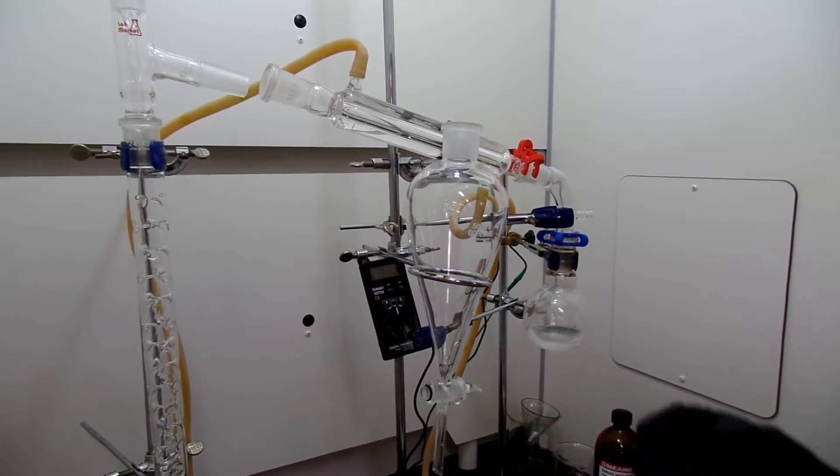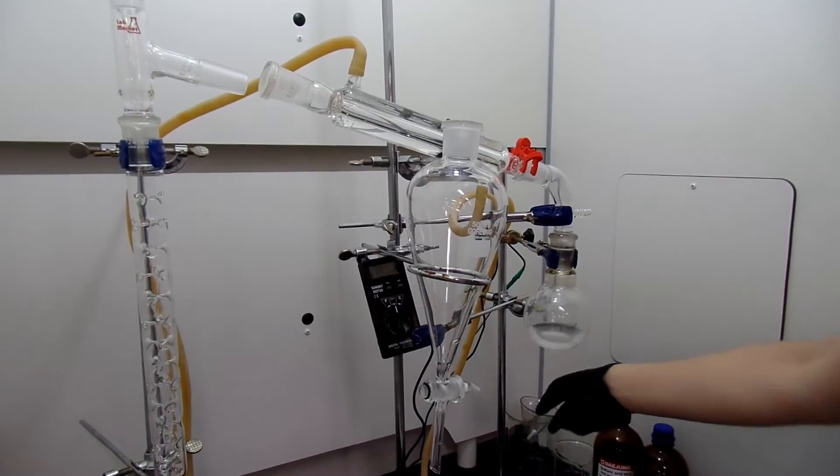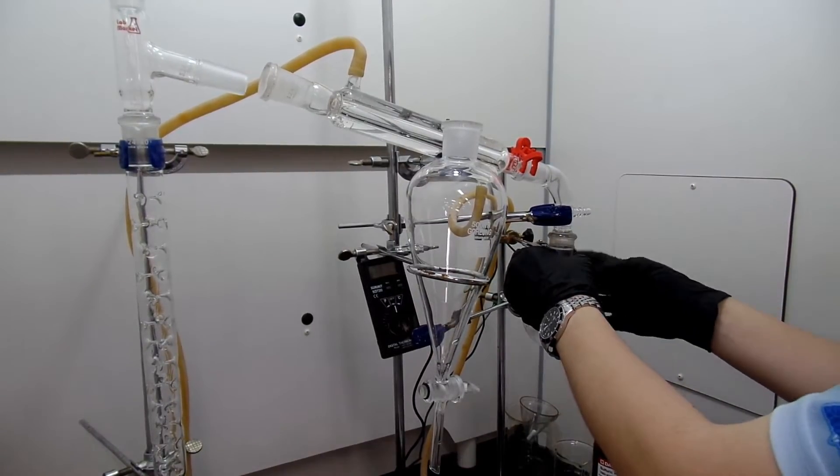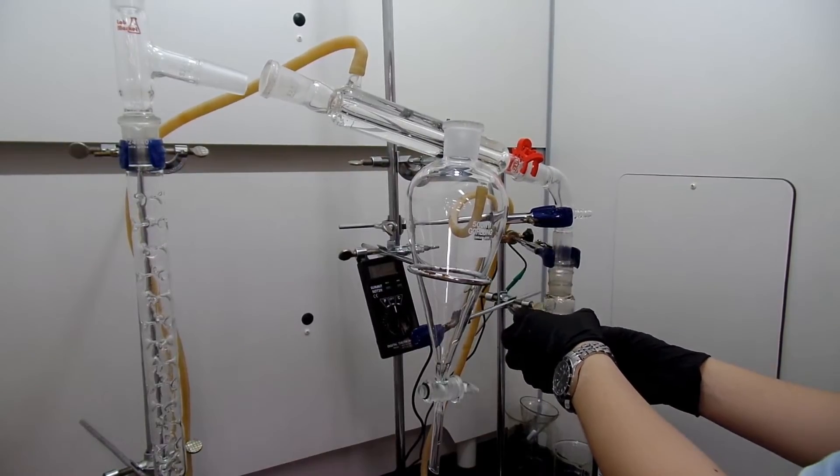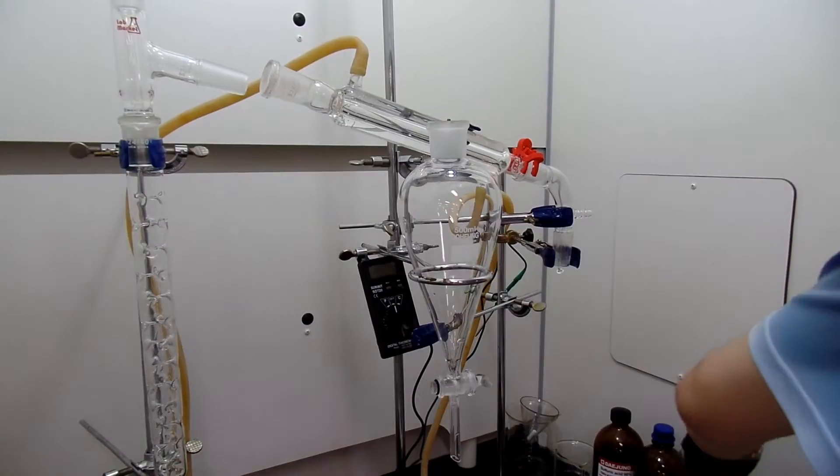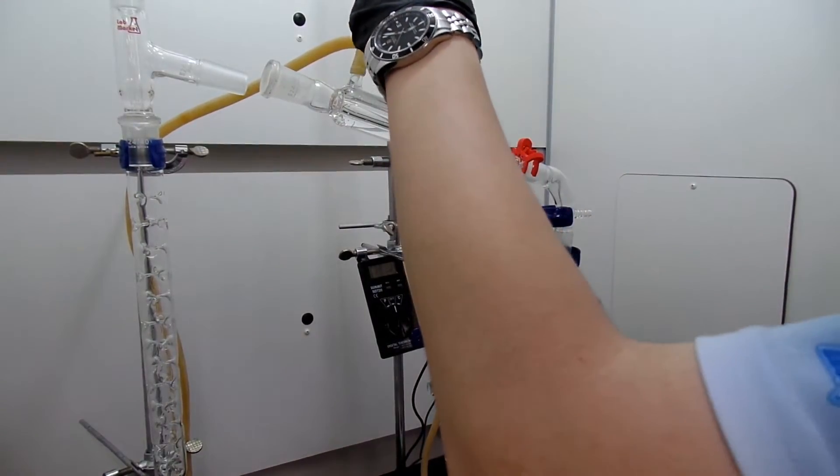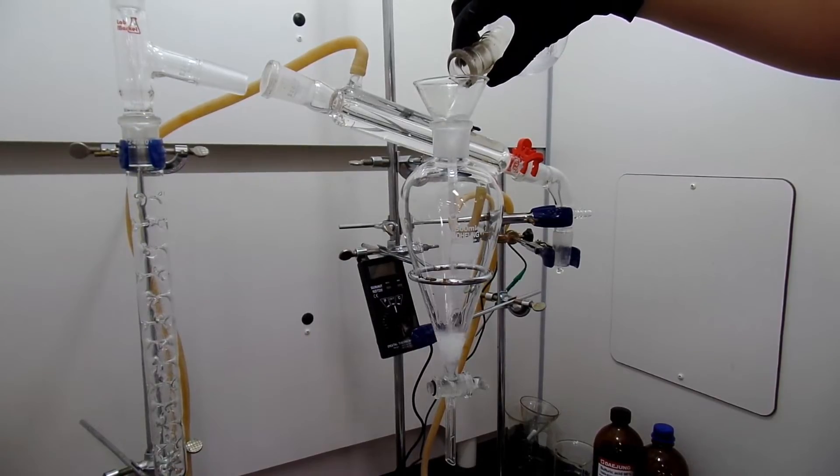The distillate should have two separate layers. The lower layer is our target, one bromopropane. Actually you will smell a lot of ether, and that is dipropyl ether created by the heating of one propanol under strong acidic condition of sulfuric acid. I don't really have to separate this thing because I'm going to use it for Grignard reaction.